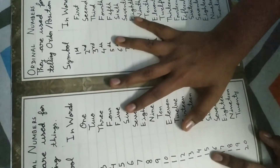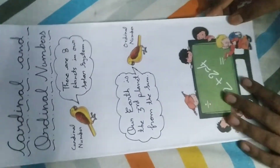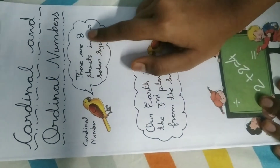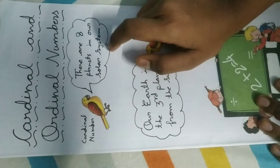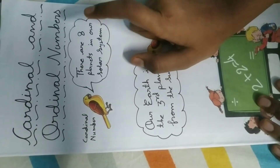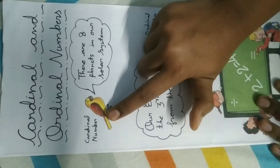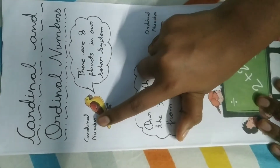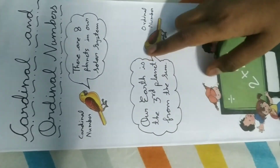Let us look at some examples. There are 8 planets in our solar system. Here, 8 is the cardinal number because it tells the number of the planets in our solar system.